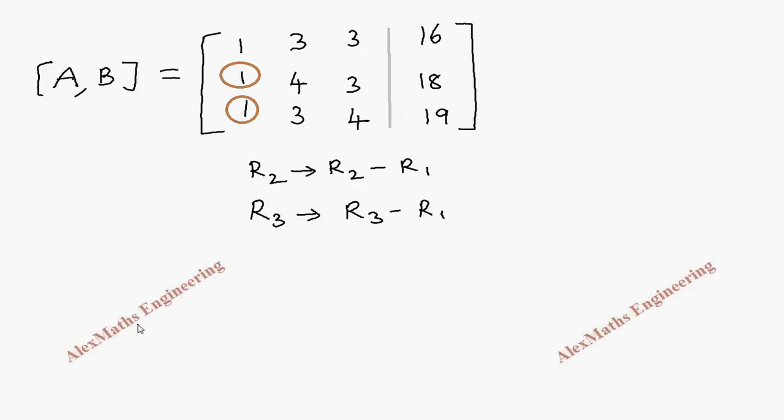this augmented matrix will become row 1. We are not doing anything. So 1, 3, 3, 16 is written as it is. r2 minus r1 is 0. 4 minus 3 is 1. 3 minus 3 is 0. 18 minus 16 is 2.